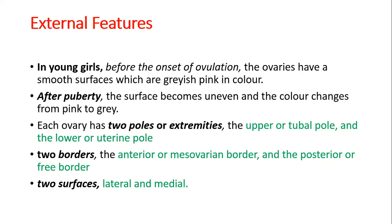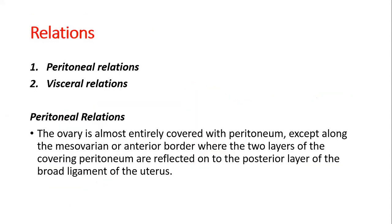Each ovary has two poles or extremities — the upper or tubal pole and the lower or uterine pole — two borders: the anterior or mesovarian border and the posterior or free border, and two surfaces: lateral and medial. Peritoneal relations: the ovary is almost entirely covered with peritoneum, except along the mesovarian or anterior border where the two layers of covering peritoneum are reflected.